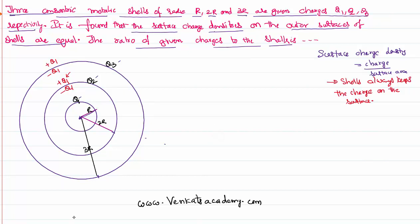This q1 on the second shell surface will induce a charge of minus q1 on the inner surface of the third shell and automatically plus q1 on its outer surface, conserving charge. So q1 has ultimately shifted to the surface of the outermost shell. Similarly, q2 induces minus q2 on the inner surface of the third shell and plus q2 on its outer surface. q3 is already on the surface of the third shell.